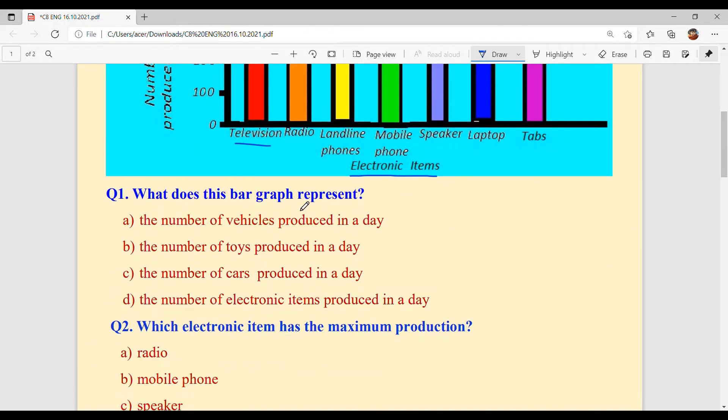What does this bar graph represent? And the answer is the number of electronic items produced in a day and option D is our answer because we are doing electronic items.